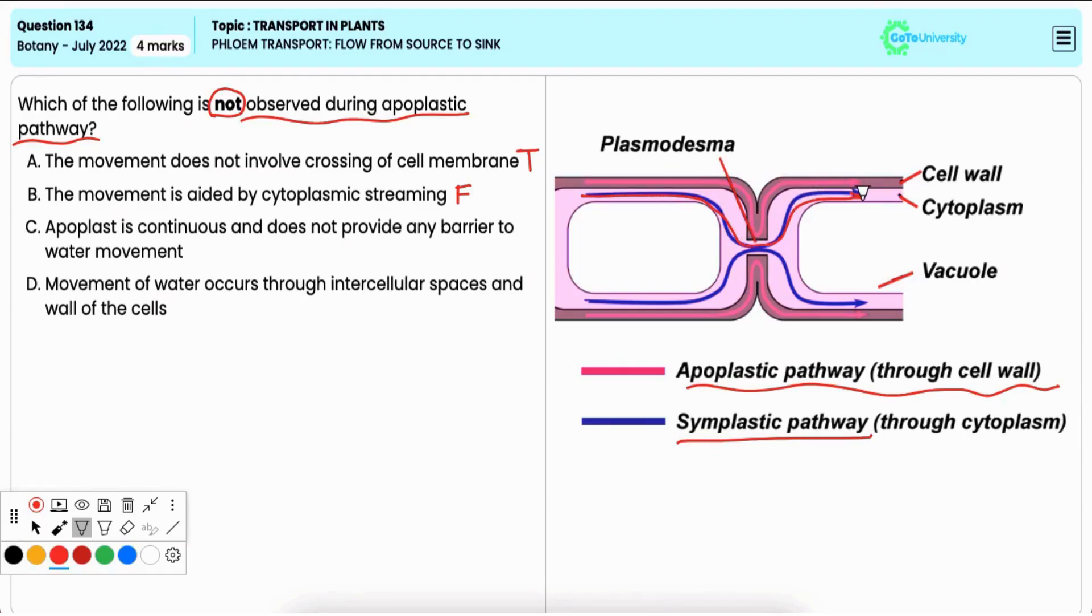Option C: Apoplast is continuous and does not provide any barrier to water movement. This is also true.